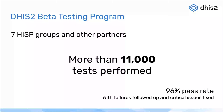I also wanted to talk about the beta testing program that was introduced in the previous release, DHIS2 version 39. We have really expanded it this time with the version 40 release. Already before the release was even out, seven different partner groups — including HISP groups, several NGOs, and several major DHIS2 implementers — have been working very hard over the last two months to test version 40, helping ensure we didn't break existing functionality and getting more feedback on features before they're released.